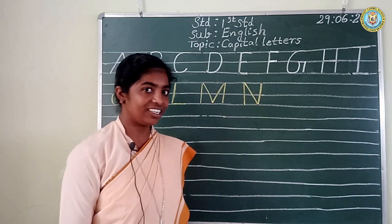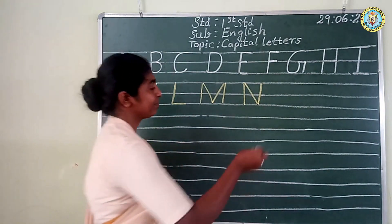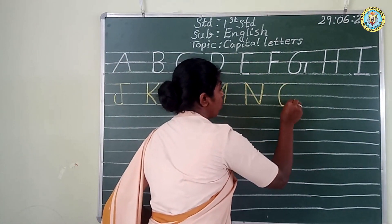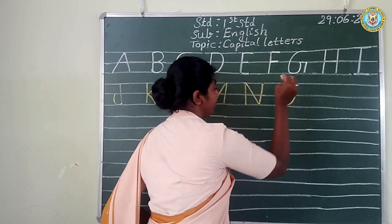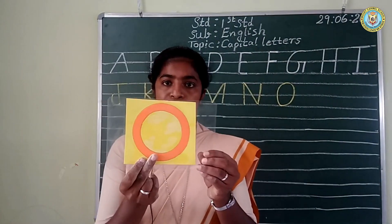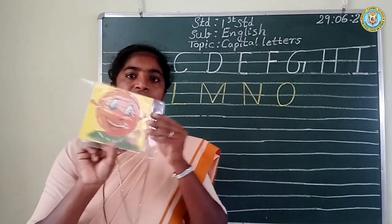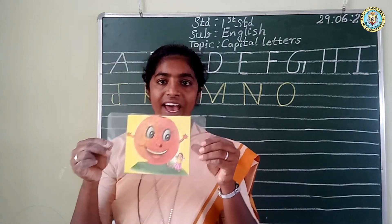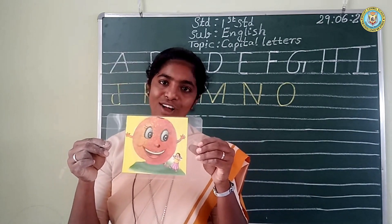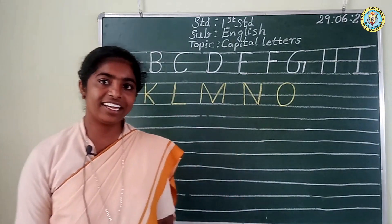Which is the next letter, children? Yes, it is O. O. Big round. O. O for orange. O for orange. Have you all eaten orange, children? Yes, we all have eaten orange.